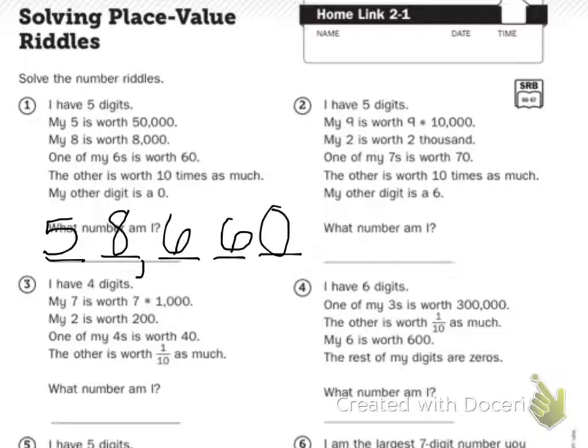Number three I will read, but you will have to do it on your own. I have four digits. My seven is worth seven times 1,000. My two is worth 200. One of my fours is worth 40. The other is worth one-tenth as much. What number am I?